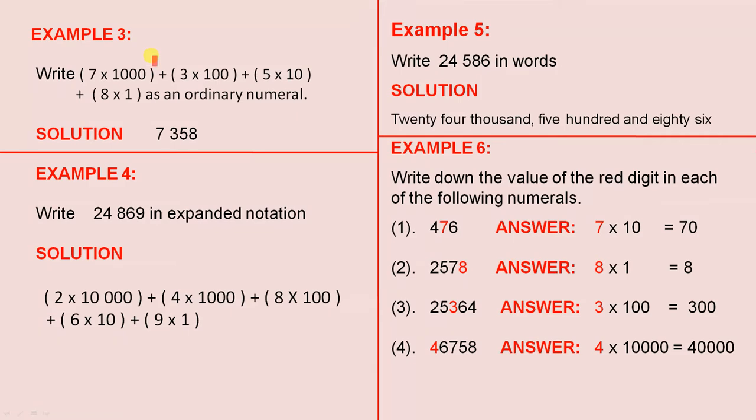Example 3. Write this here as an ordinary numeral. That's expanded notation as an ordinary numeral. We have 7, 3, 5, 8. 7, 3, 5, 8. That's correct.